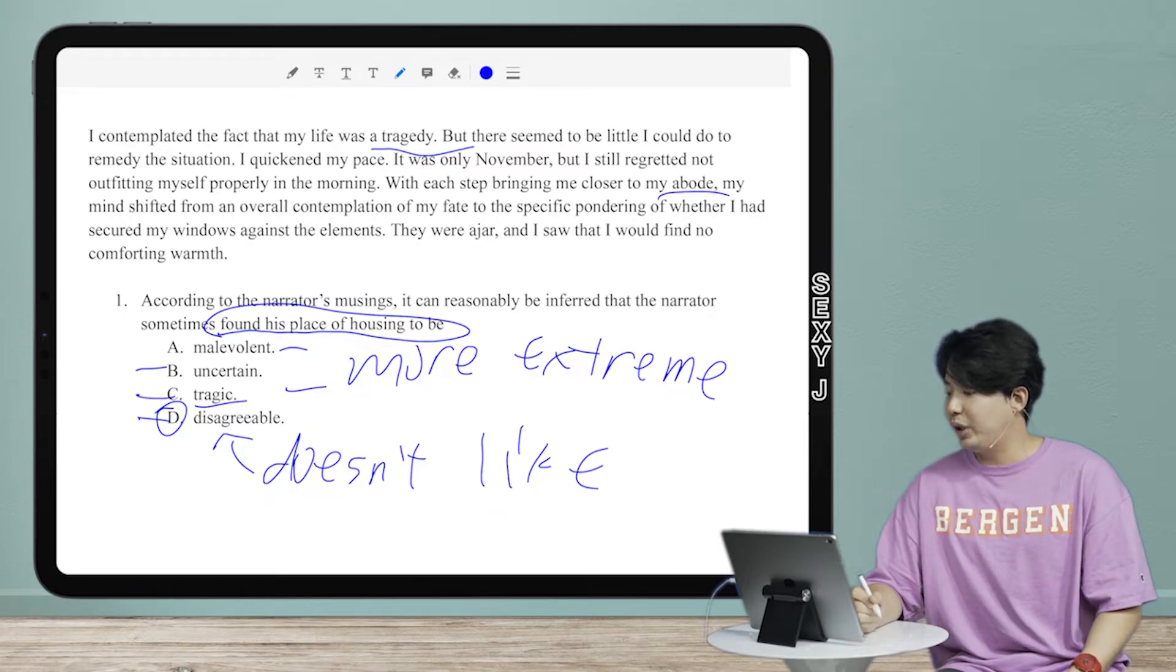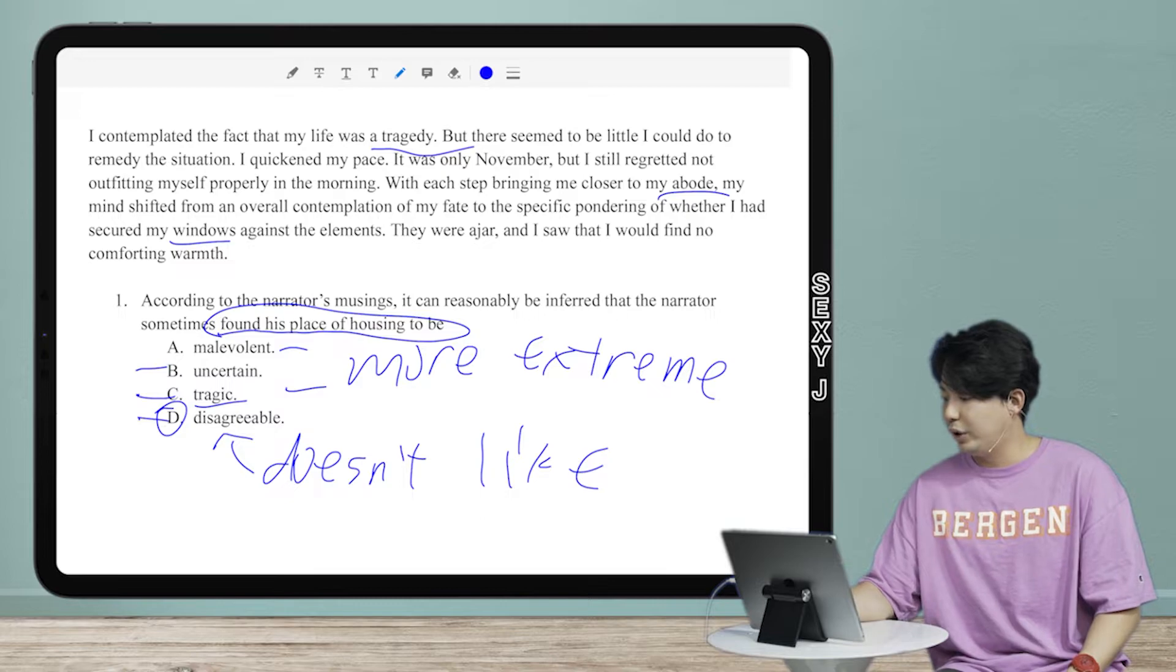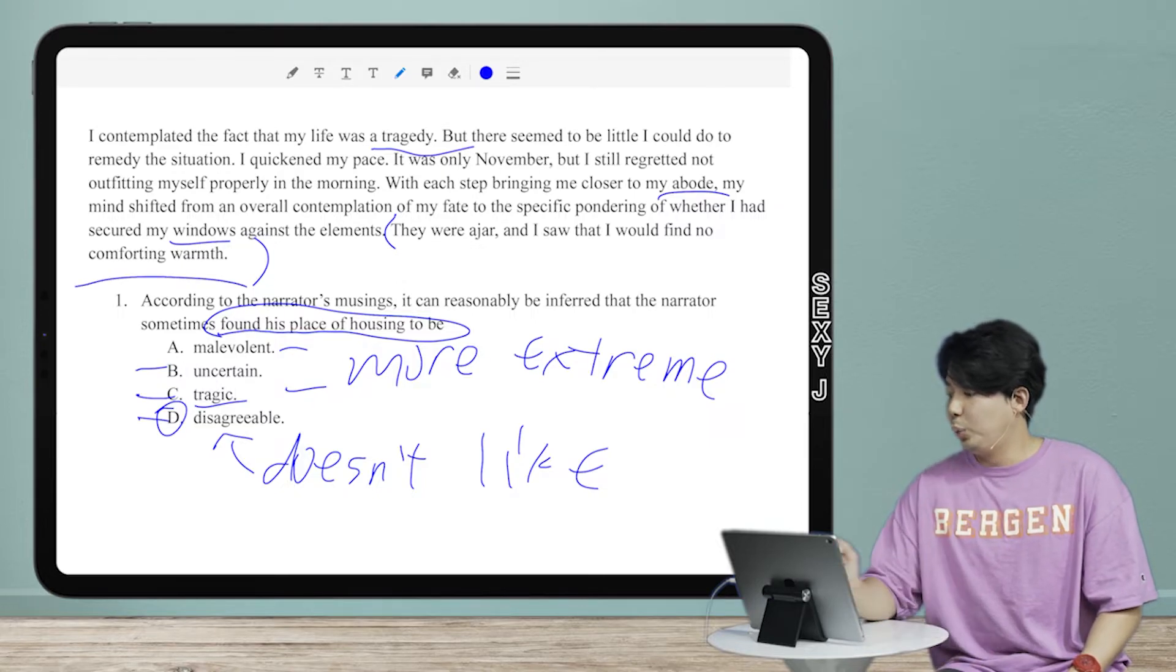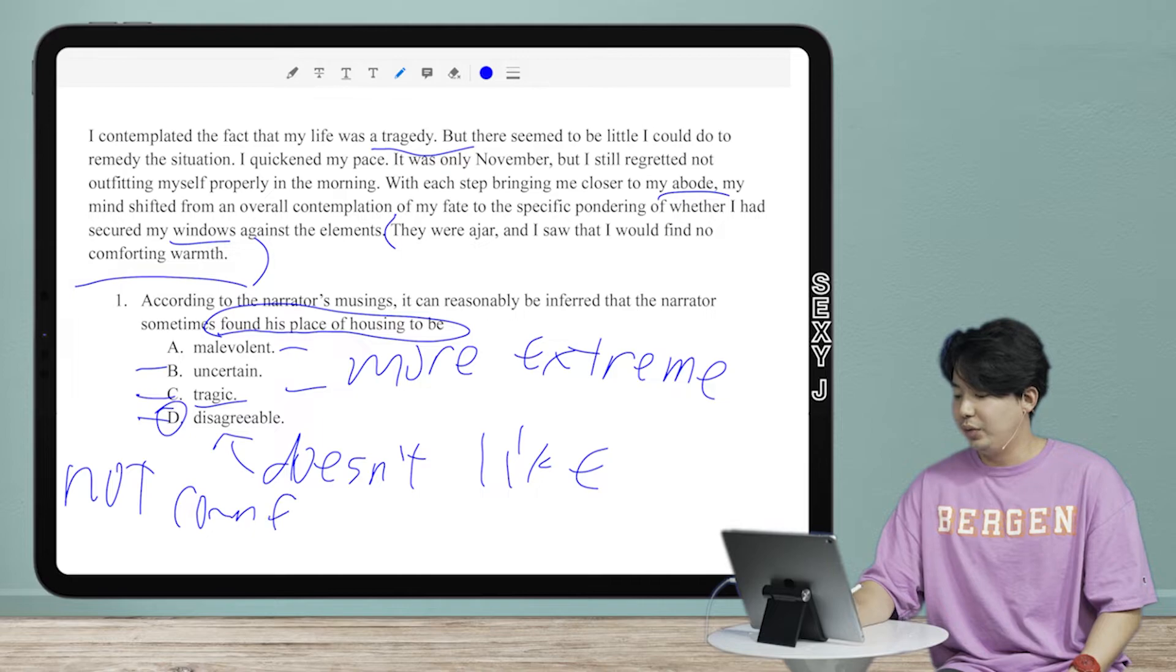So where do I talk about where he lives? This is over here, right here, and his windows, his house. So the actual evidence is here. The windows are all open and he sees that it's not comforting. So what did I have in the text? Not comforting.